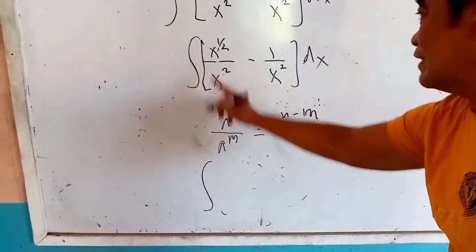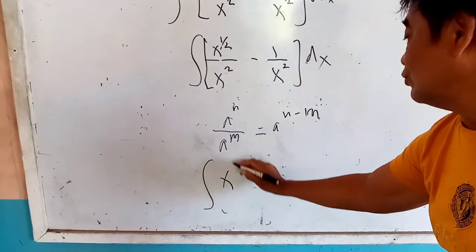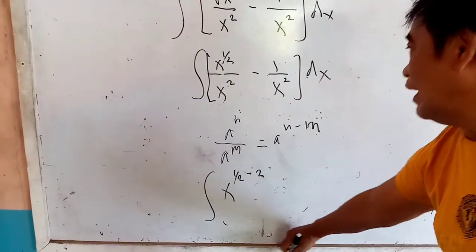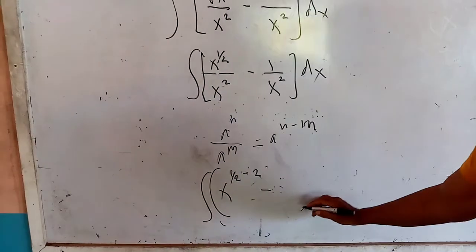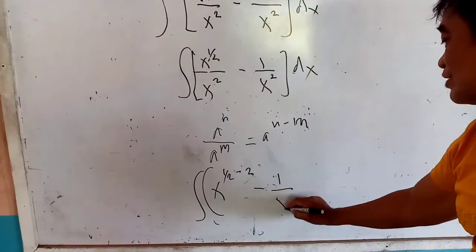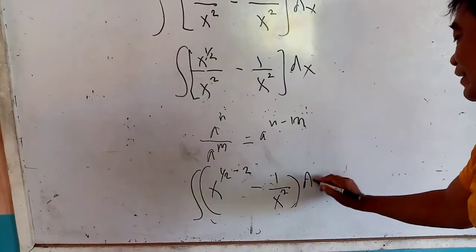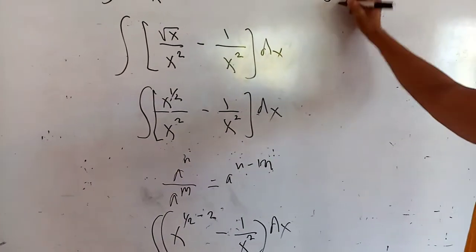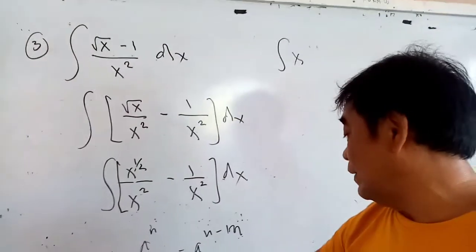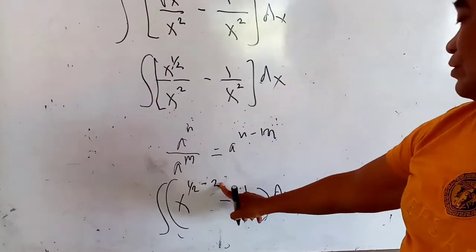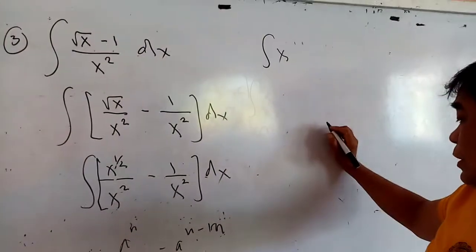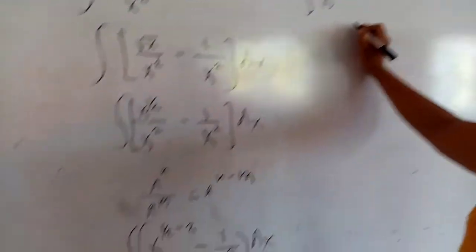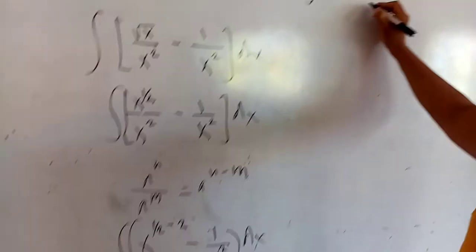To divide this, that would be x to the one-half minus 2, minus 1 all over x squared, multiplied by differential dx. Then, the integral of x — one-half minus 1 would be: 2 times 2 is 4, minus 1 would be negative three-halves — multiplied by dx, minus the integral of 1 times dx all over x squared.